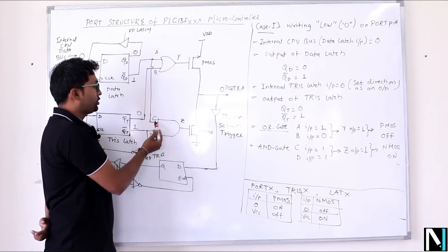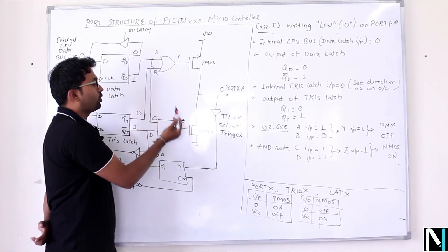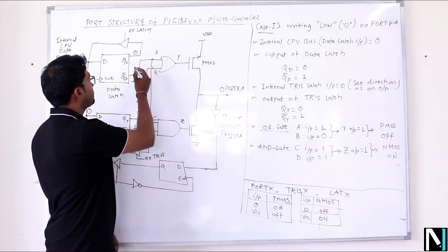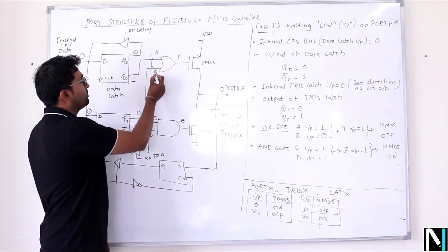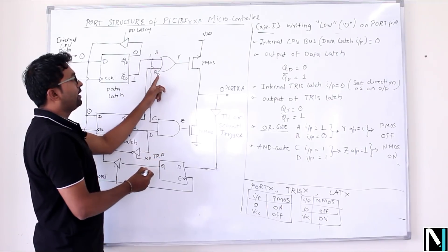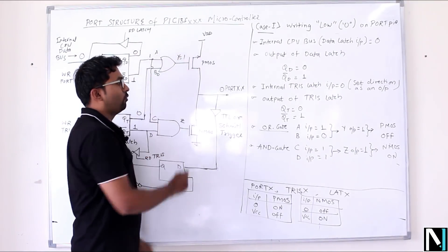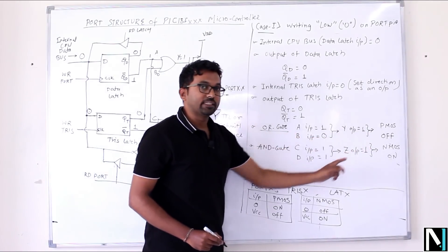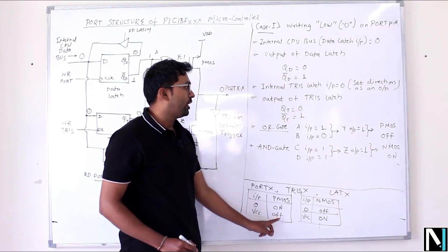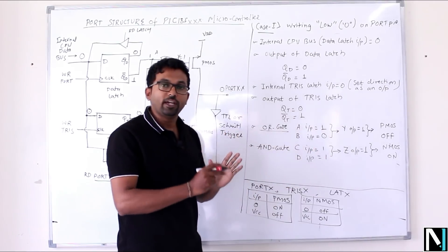Now for the OR gate: input A is QD-bar = 1, and input B = 0 (from QT = 0). So the OR gate output Y = 1 OR 0 = 1. Since Y = 1, that means VCC is applied to the gate of the PMOS, so PMOS remains OFF.